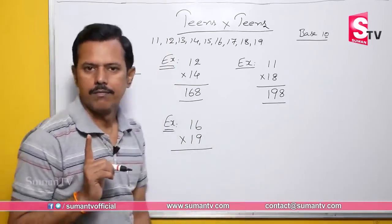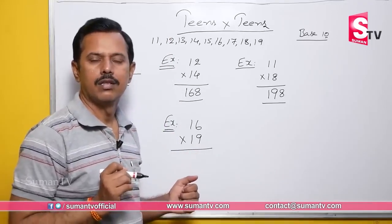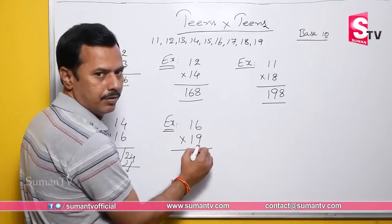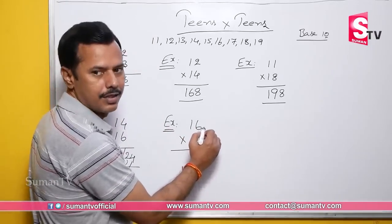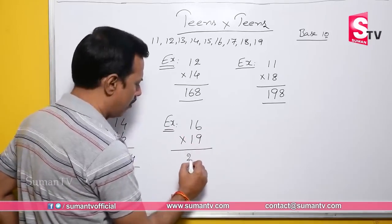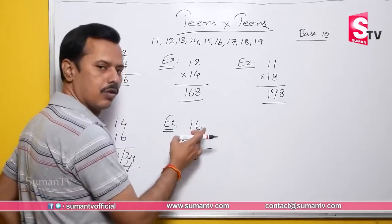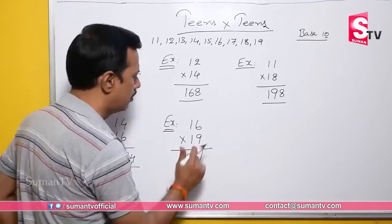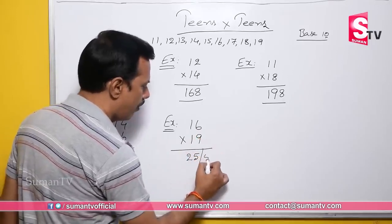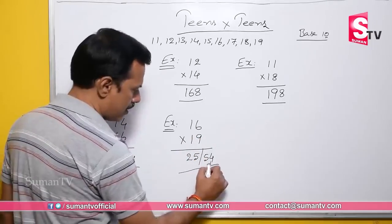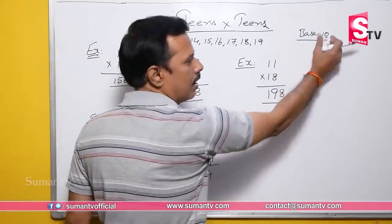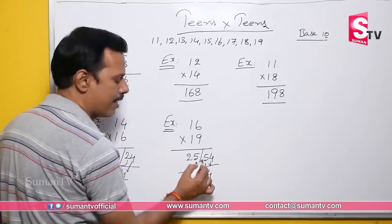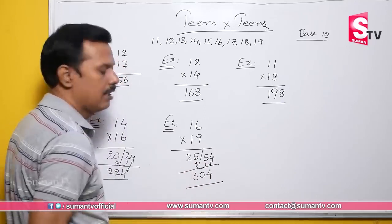Example: 16 into 19. Left part: 16 plus 9 = 25, or 19 plus 6 = 25. Right part unit space: 6 × 9 = 54 — two digits. Right part single digit is 4, carry forward 5. Add 5 to left part: 25 plus 5 = 30. So 16 into 19 is 304.